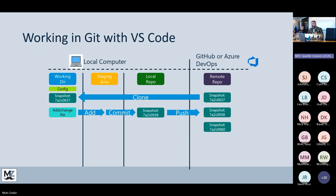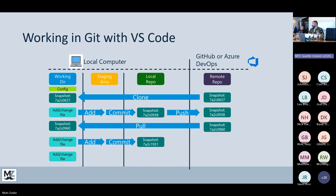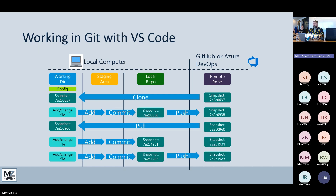There might be some other changes your teammates make on the remote side, and then you pull those back to your machine. You can do as many changes locally as you want — add, commit — and then push back. When you do that push action, the snapshot you didn't push in the moment also gets pushed in that push action. I like this visual because it shows that cycle.